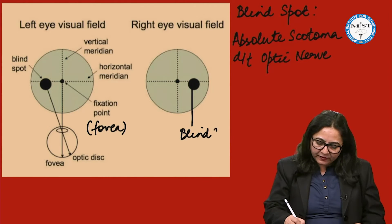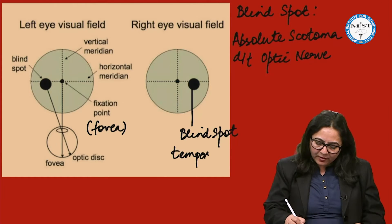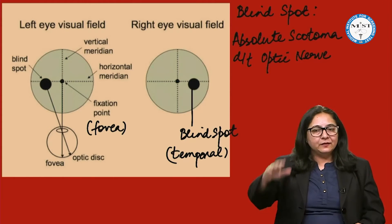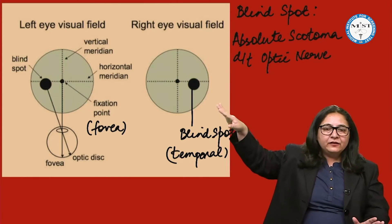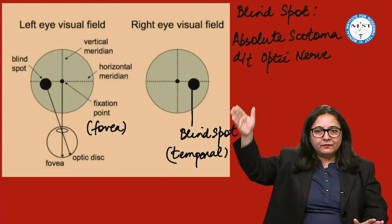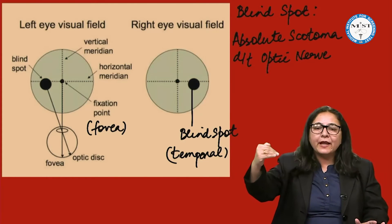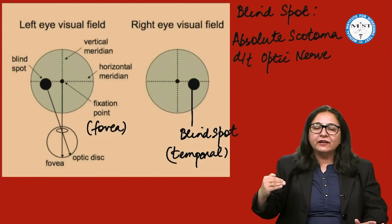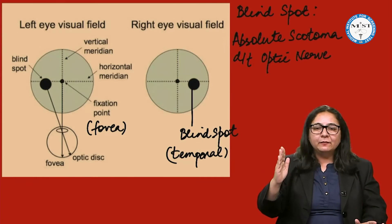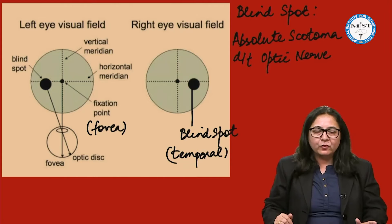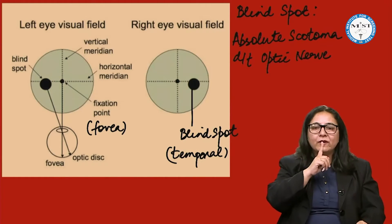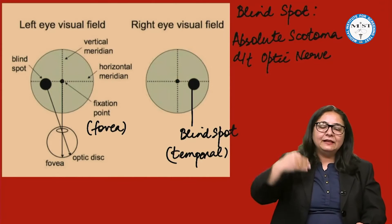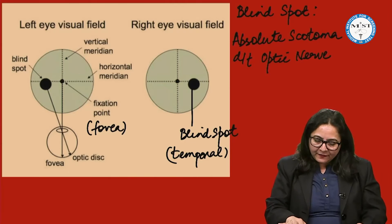In the visual field, the blind spot will be temporal because it is opposite to its position in the retina. So in the visual field, blind spot is temporal and the fixation point is central. To describe visual field defects, the visual field is divided by the horizontal meridian into superior and inferior halves, and by the vertical meridian into nasal and temporal halves. The temporal half is on the outer aspect and the nasal half is toward the midline.